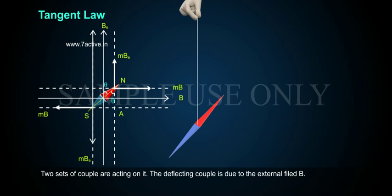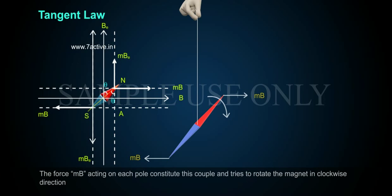Two sets of couple are acting on it. The deflecting couple is due to the external field B. The force MB acting on each pole constitute this couple and tries to rotate the magnet in clockwise direction.